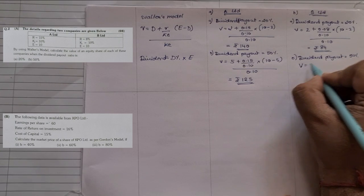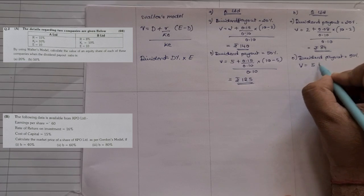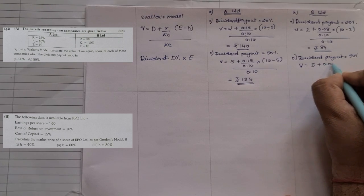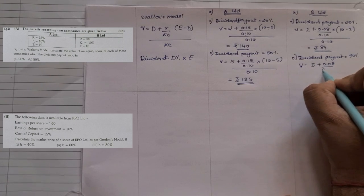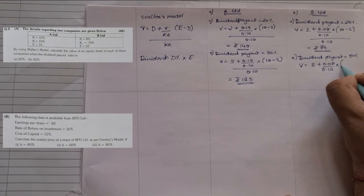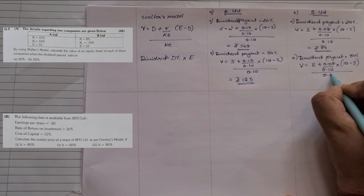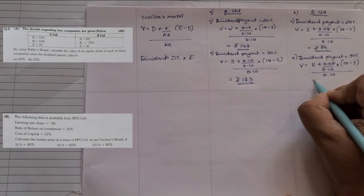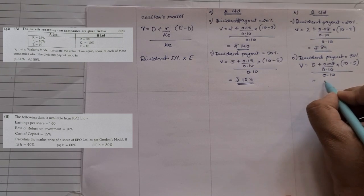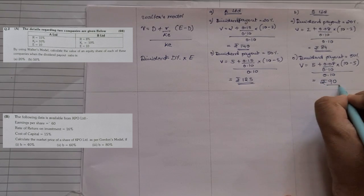And lastly for B Limited when dividend payout is 50%: D = ₹5. Value of Share = [5 + (0.08/0.10) × (10 − 5)] / 0.10 = ₹90.